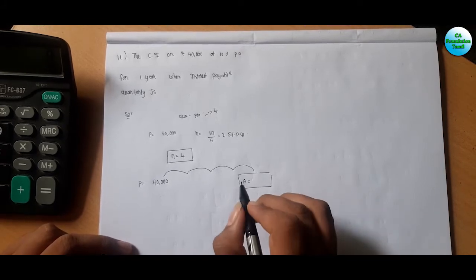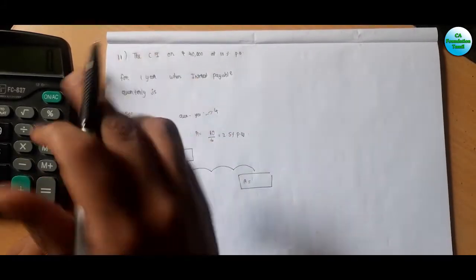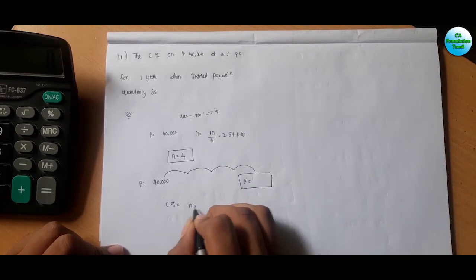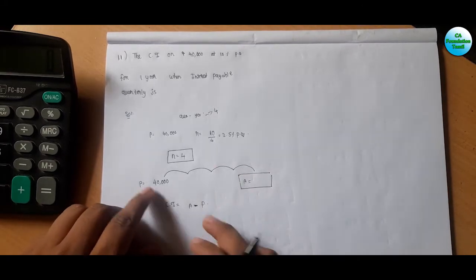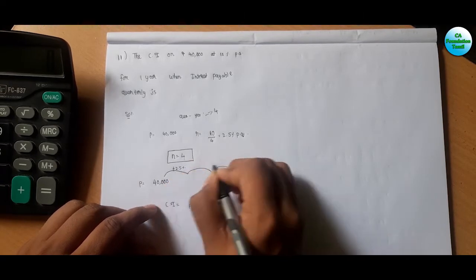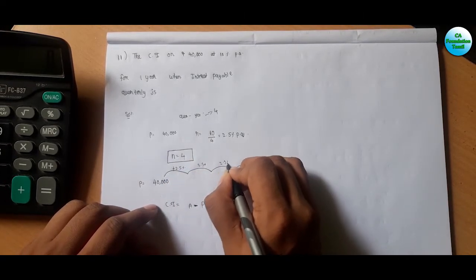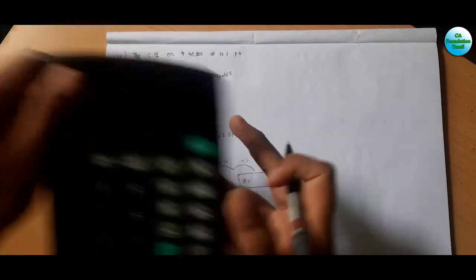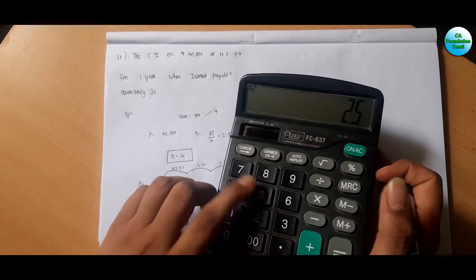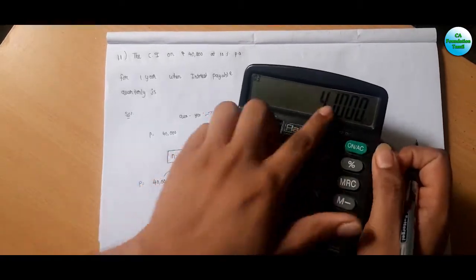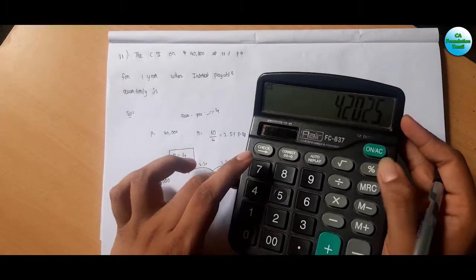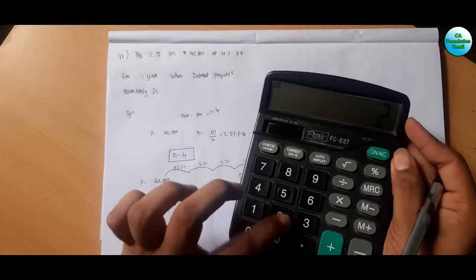What is the rate of income? That is compound interest. Compound interest equals total amount minus principal. So first total amount, plus 2.5 percent — this is 2.5 percent for the first quarter, 2.5 percent for the second, 2.5 percent for the third quarter as well.